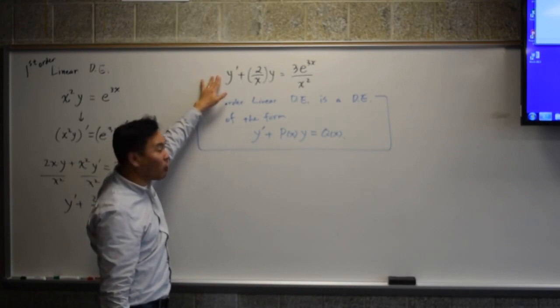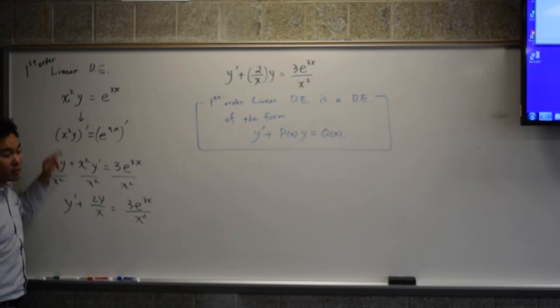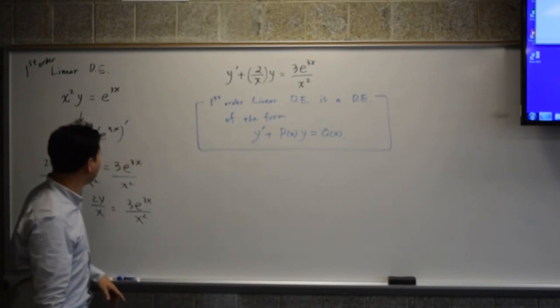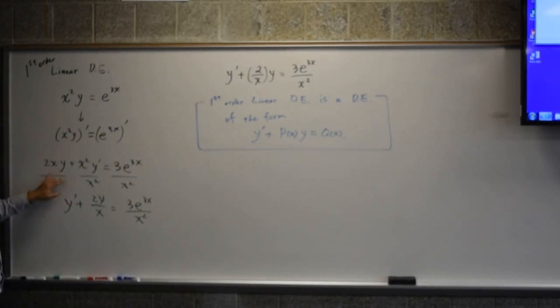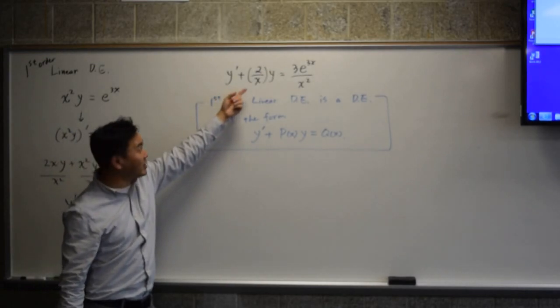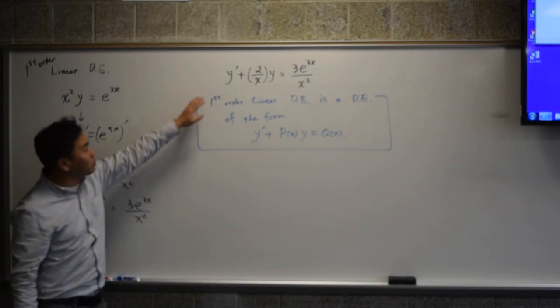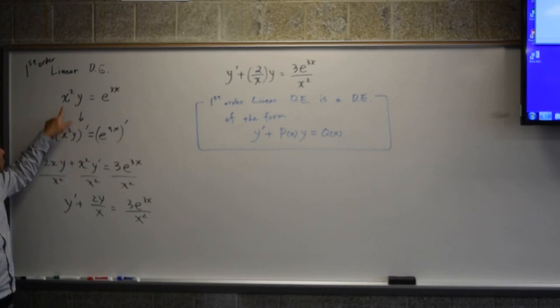From the perspective of solving it, it will always be the case that you get the first-order linear when there was some product rule involved. That means the way to solve a first-order differential equation is to multiply something so that the left side resembles a product rule, and then you have to undo the product rule. Once you undo the product rule, you will get to the answer. That's basically the plan.